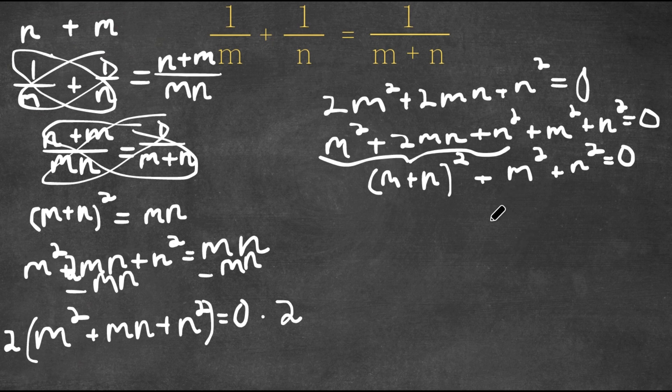So now if we set m equal to 0 and n equal to 0, then this also means that m plus n would be equal to 0. And that means that all of these combined would also equal 0.